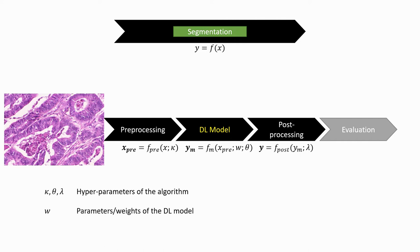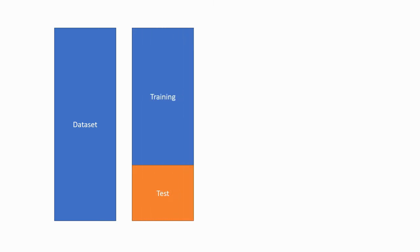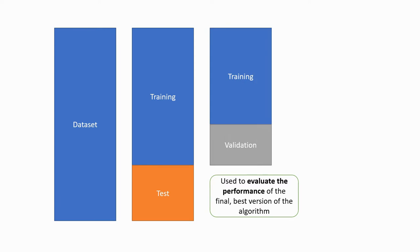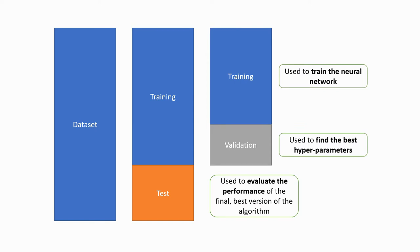The distinction between parameters and hyperparameters is important because the way we find them is different. The parameters of the model are set through the training process when we fit data into the model. The hyperparameters are set through the validation process, using a subset of training data that we don't use to set the parameters. We always first split the full dataset into a training and test set. The test set evaluates the final performance of the algorithm and should not be looked at until we have our best version. The training set is further split into a training and validation set to find the best hyperparameters.